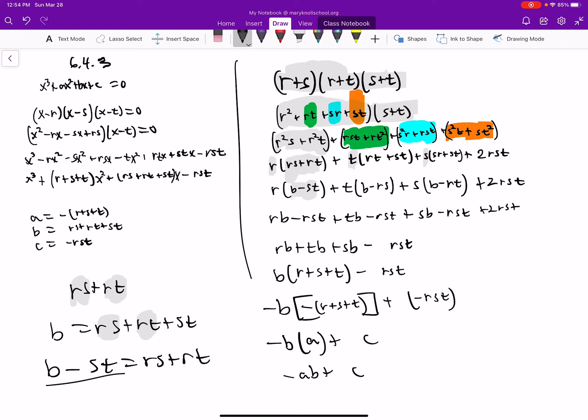We substitute that in, and luckily that took us somewhere because we ended up with a bunch of r*s*t terms. When you multiply r times s*t, you get r*s*t. This t times r*s gives another r*s*t, and s times r*t gives another r*s*t.